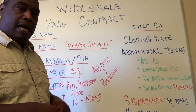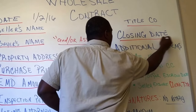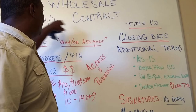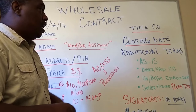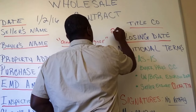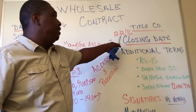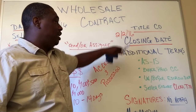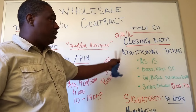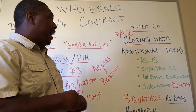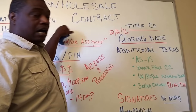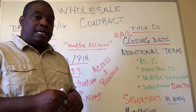Next, you need the closing date — when is this transaction going to be finalized? For example, if the contract was written on 1/2/16, let's say the closing date is 2/2/16. That needs to be on the contract. But more importantly, if you're wholesaling, there's additional verbiage I'll cover in the additional terms and conditions section that needs to be added alongside the closing date.